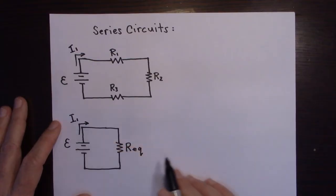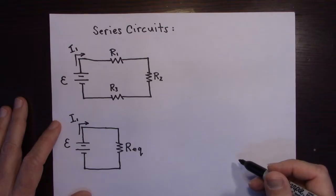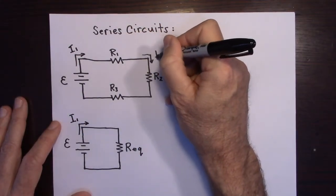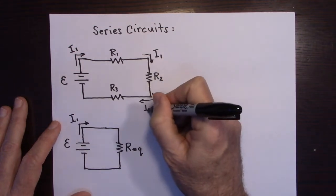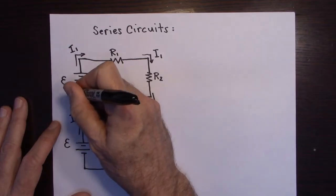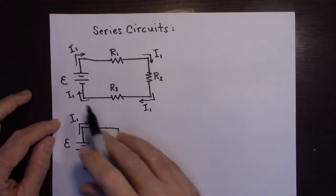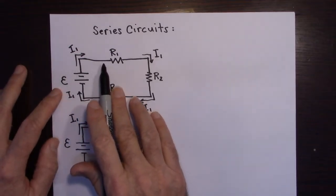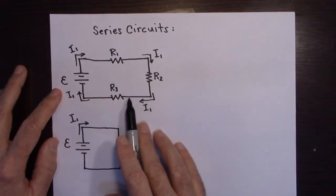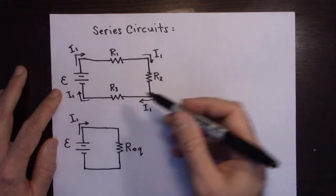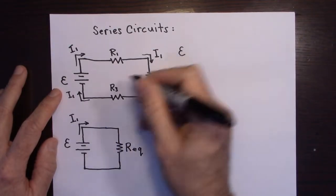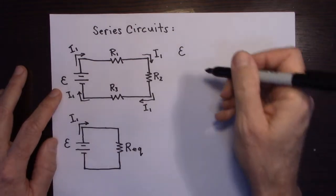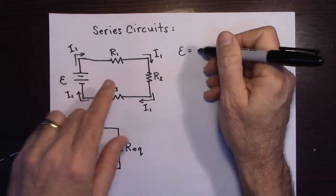To figure out this equivalent resistance — how to replace all these with a single resistor and get the same current — let's use Kirchhoff's rules. First, the junction rule: since this circuit doesn't have any junctions, the current I1 flows through all resistors. That means I1 is throughout the whole circuit. Now I'm going to use the loop rule: going around the loop, the EMF voltage minus the voltage drops across each resistor has to equal zero. So the EMF of the battery equals the sum of all three voltage drops.